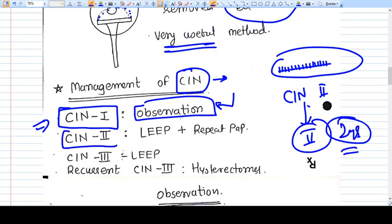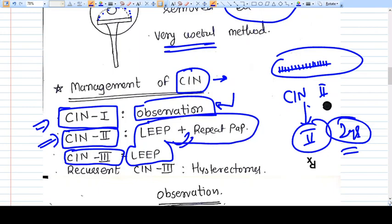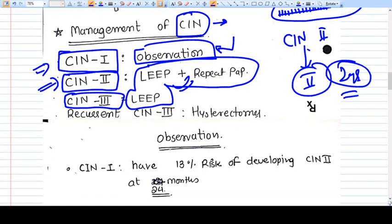But if we found that it is CIN2 and CIN3, then we should go for excisional method, that is LEEP, and repeating Pap smear in future. Recurrent CIN3 is an indication for hysterectomy.